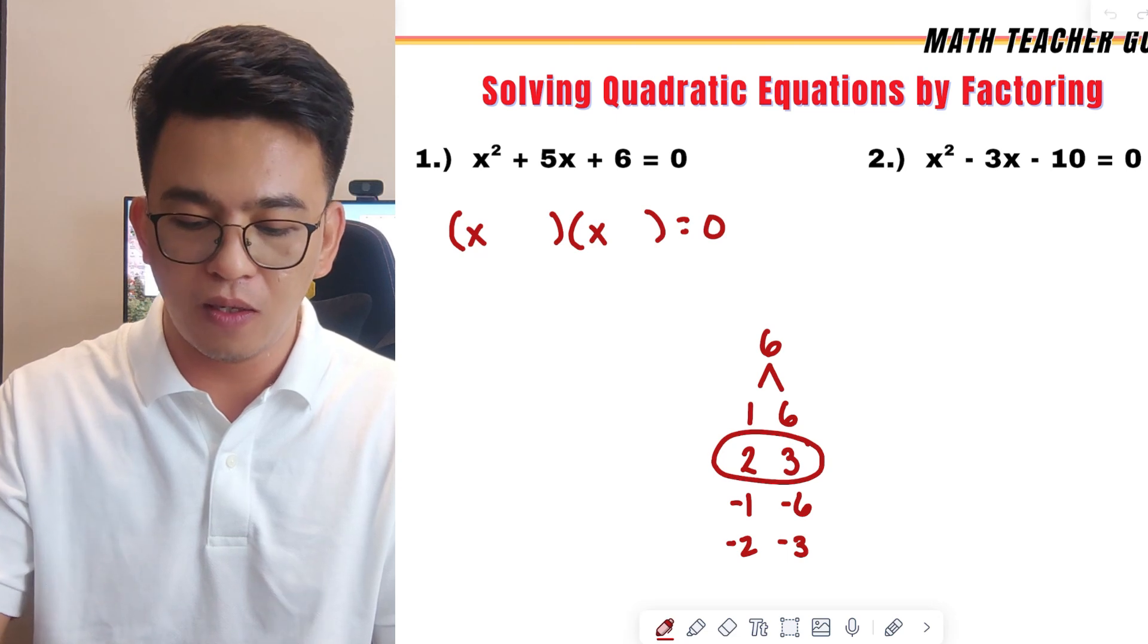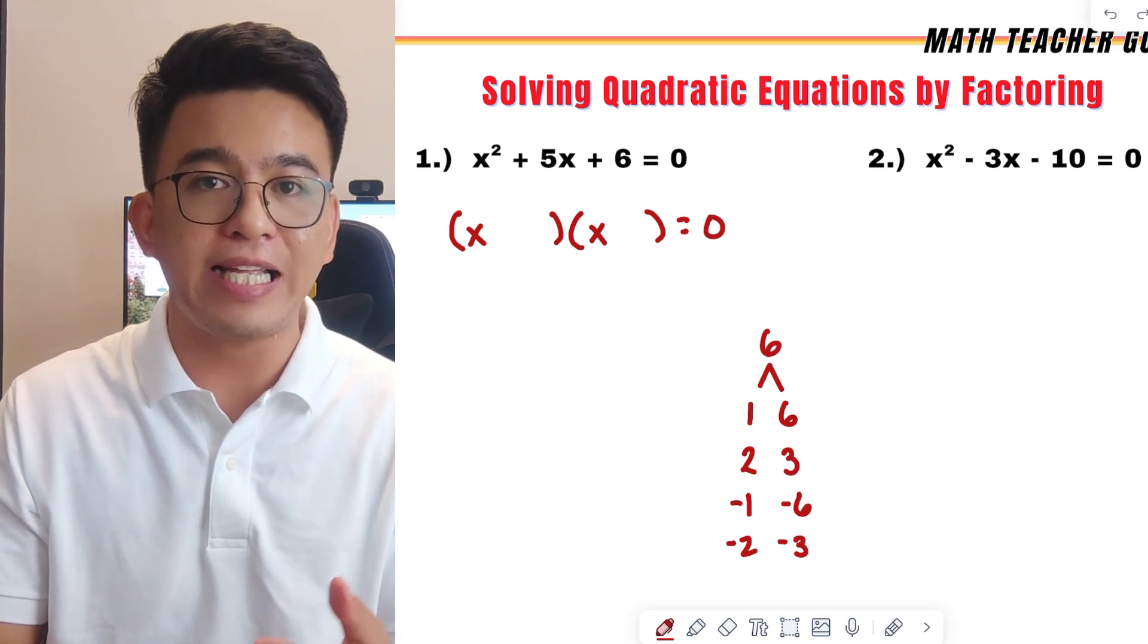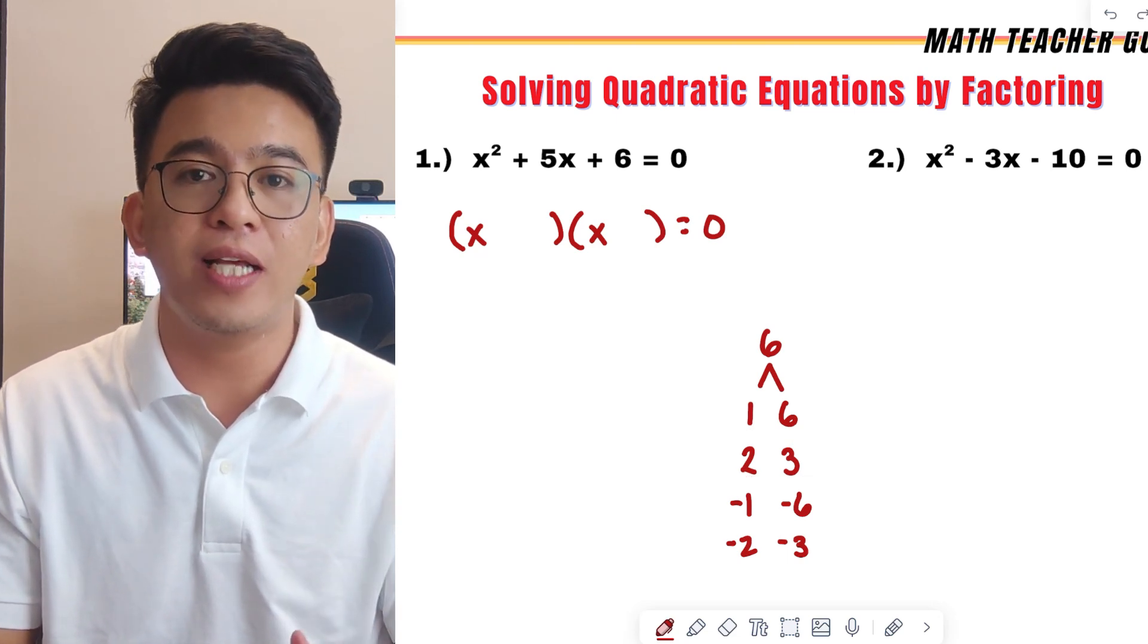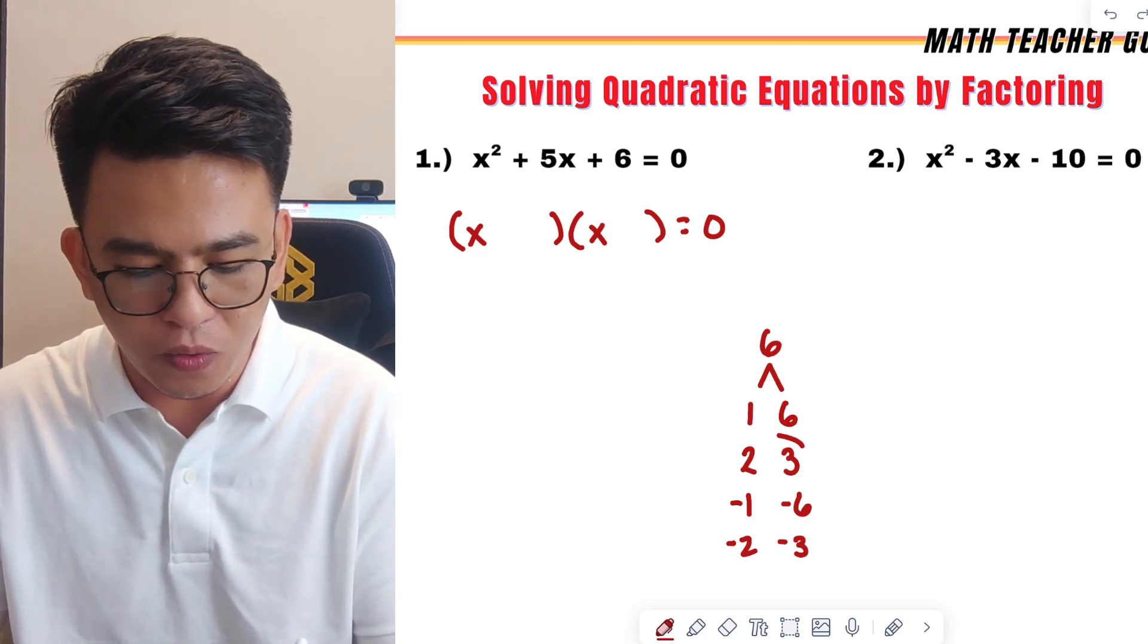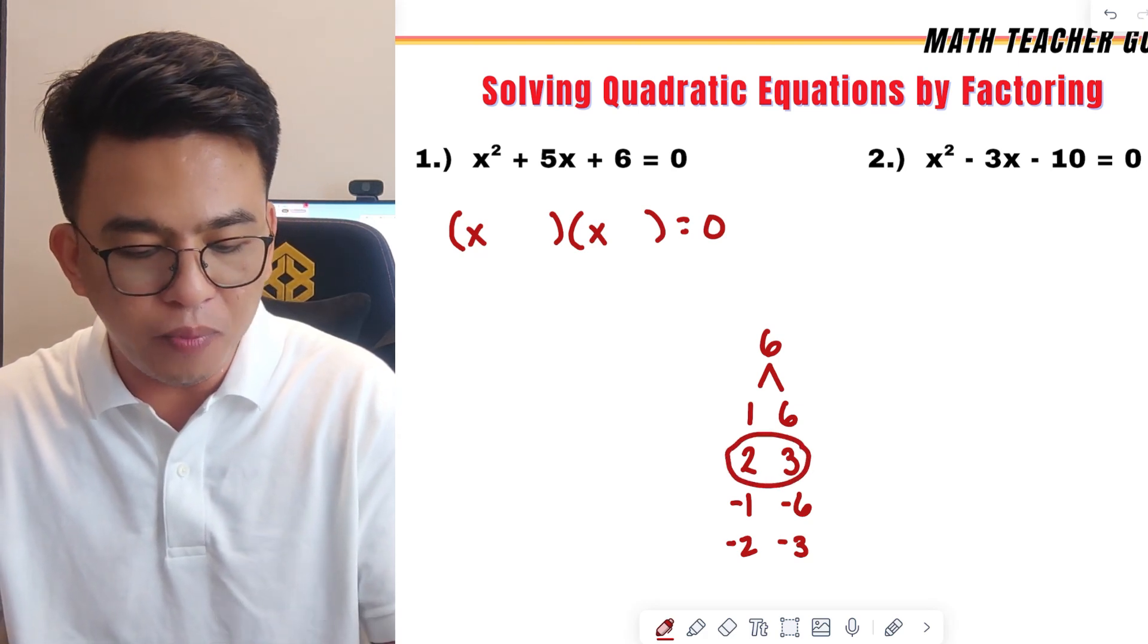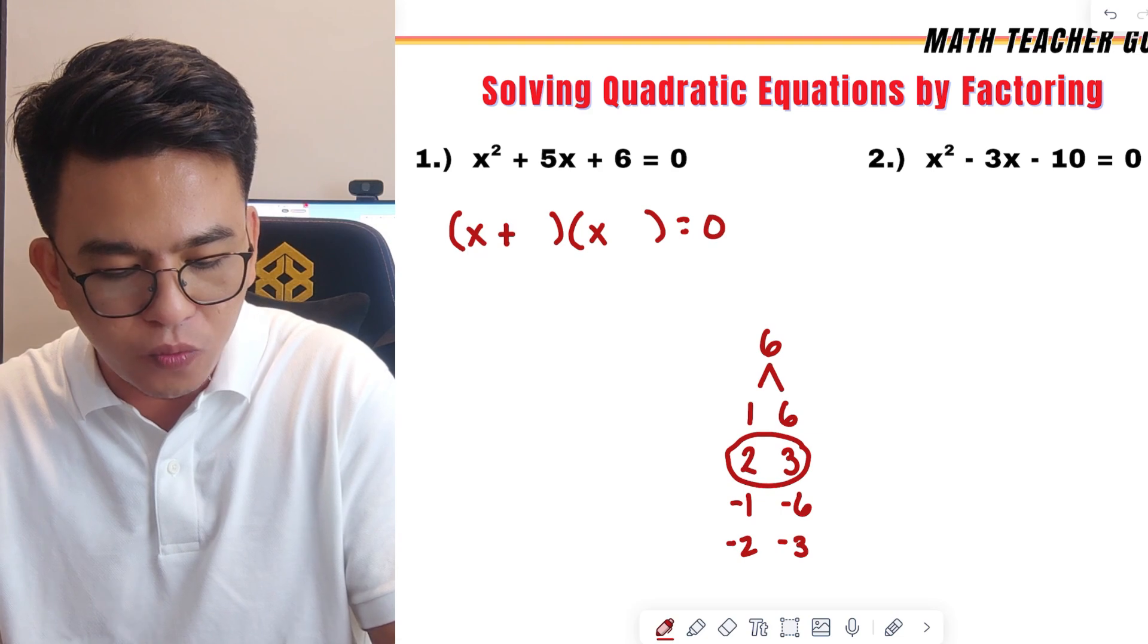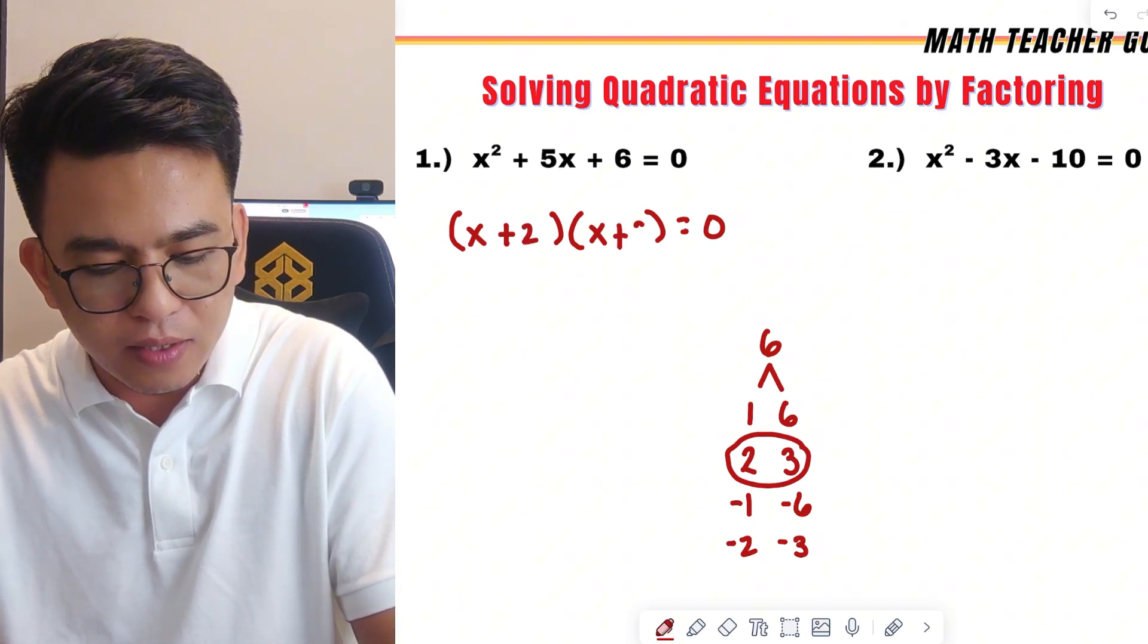Let us check. What is 2 times 3? The correct answer is 6. What is 2 plus 3? The correct answer is 5. So, right now, we will use 2 and 3 and we will put that here, plus 2, then plus 3.